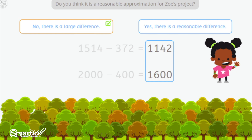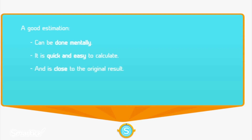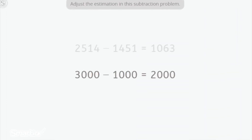It is not reasonable. A good estimation can be done mentally, is quick and easy to calculate, and is close to the original result. In an estimation, there needs to be a balance between the approximation and ease of calculation. To practice, adjust this unreasonable estimate. Instead of rounding to the thousands, we are going to round to the hundreds — it is more precise and the operation will be easier to solve.